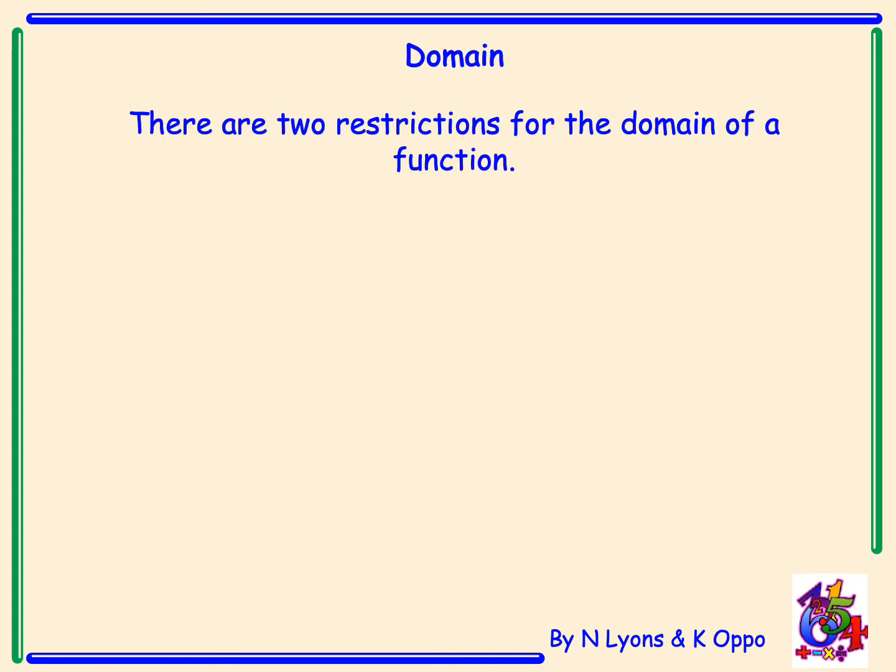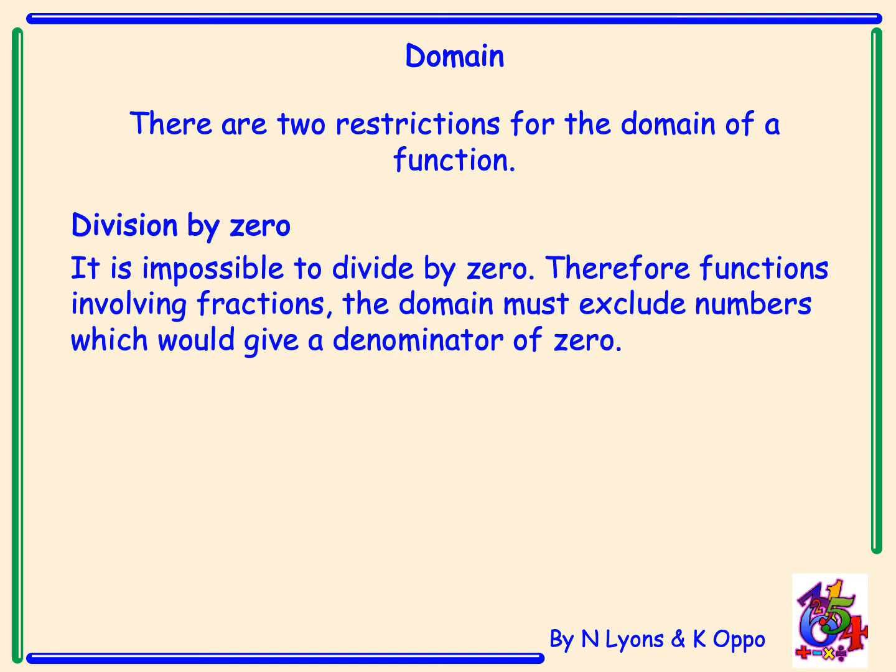The domain. There are two restrictions for the domain of a function. Division by zero. It is impossible to divide by zero. Therefore functions involving fractions, the domain must exclude numbers which would give a denominator of zero. So if we are putting numbers into a function, we want to make sure that any of those numbers would not give a denominator of zero.